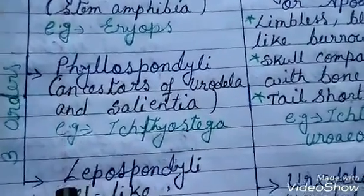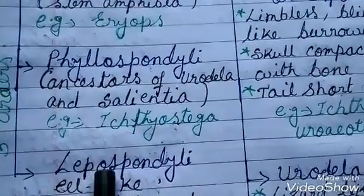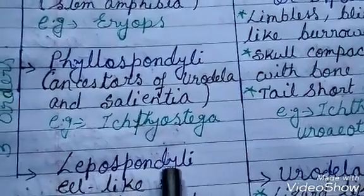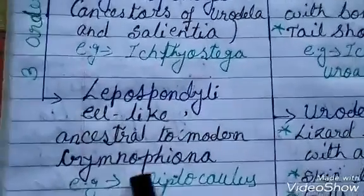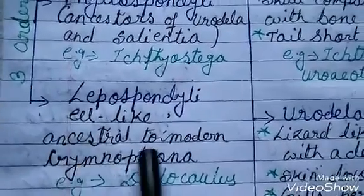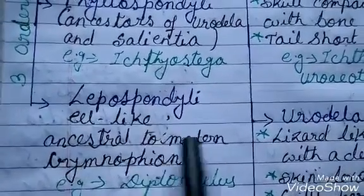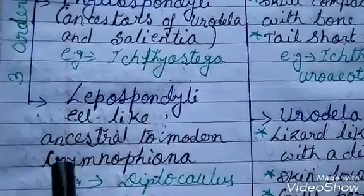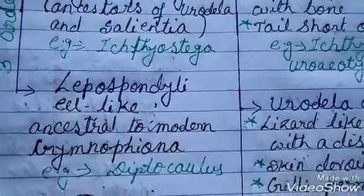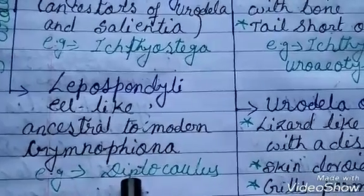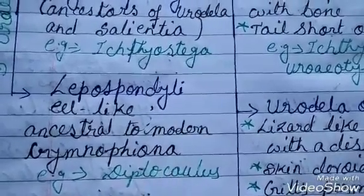Third is Lepospondyli, which is eel-like and ancestral to the modern Gymnophiona. Example is Diplocaulus.